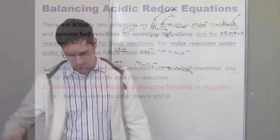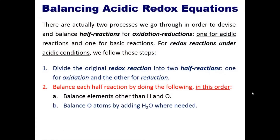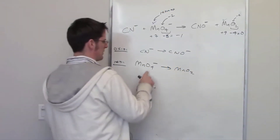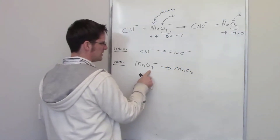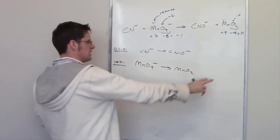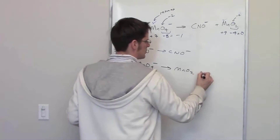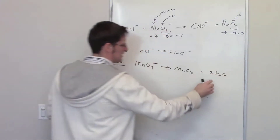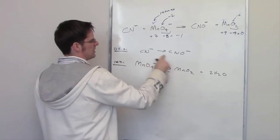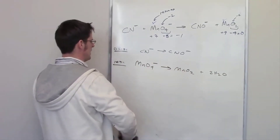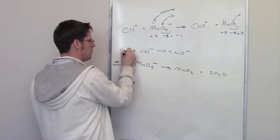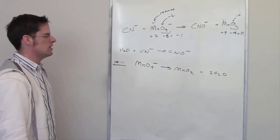The next step says balance oxygen atoms by adding H₂O where needed. In the reduction half reaction, I've got four oxygen atoms on the left and two on the right, so I add two molecules of water to the right — now four oxygens on each side. In the oxidation half reaction, I've got one oxygen on the right and none on the left, so I add one molecule of water to the left. Now oxygens are balanced.